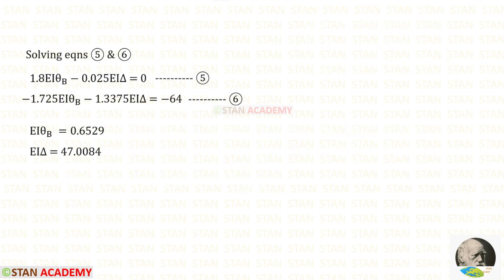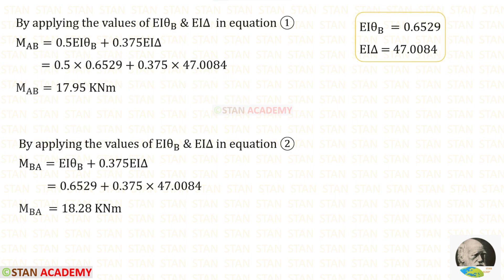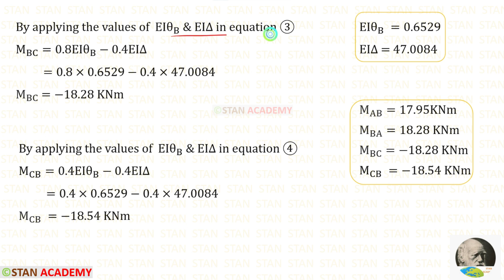Now we have two equations — number 5 and number 6. Using a calculator to solve these simultaneously, we obtain the values of EI·theta_B and EI·delta. Applying these values in equation 1 gives MAB, equation 2 gives MBA, equation 3 gives MBC, and equation 4 gives MCB.